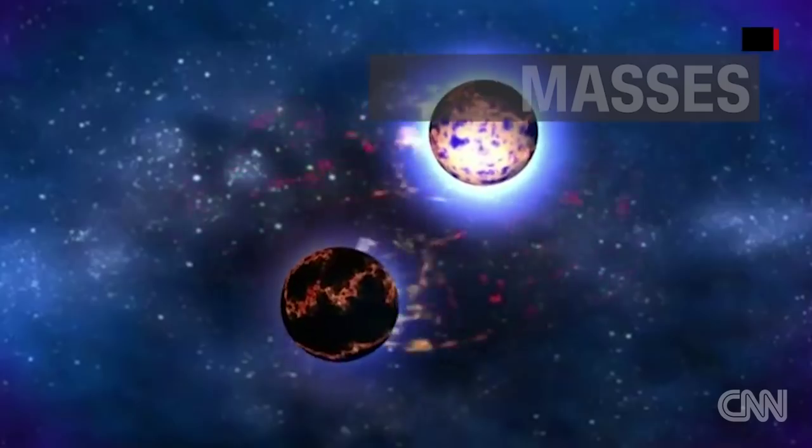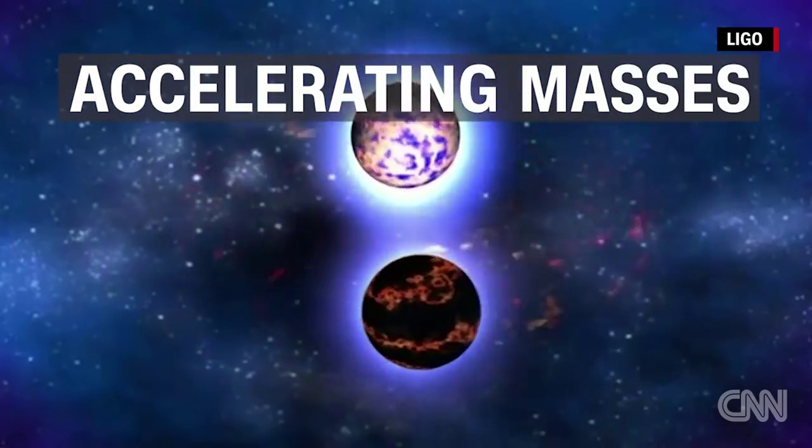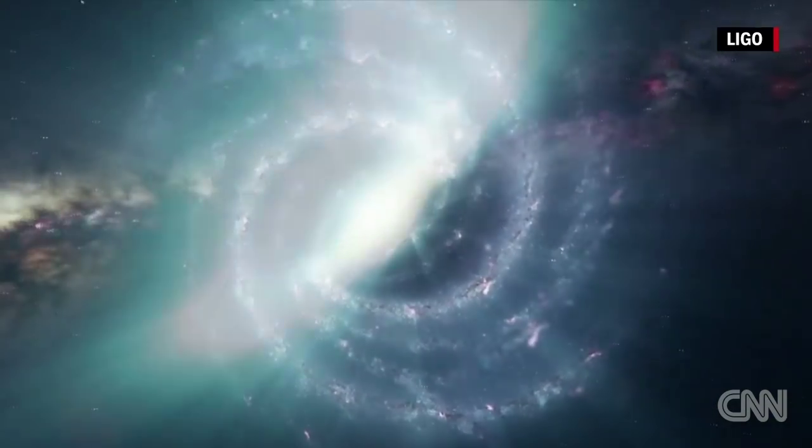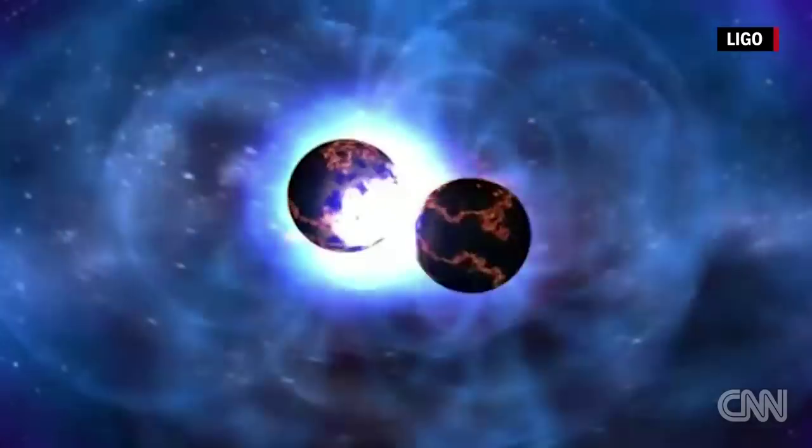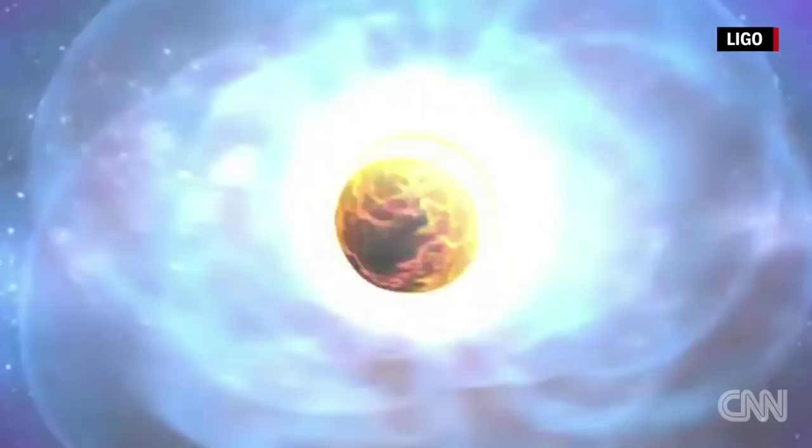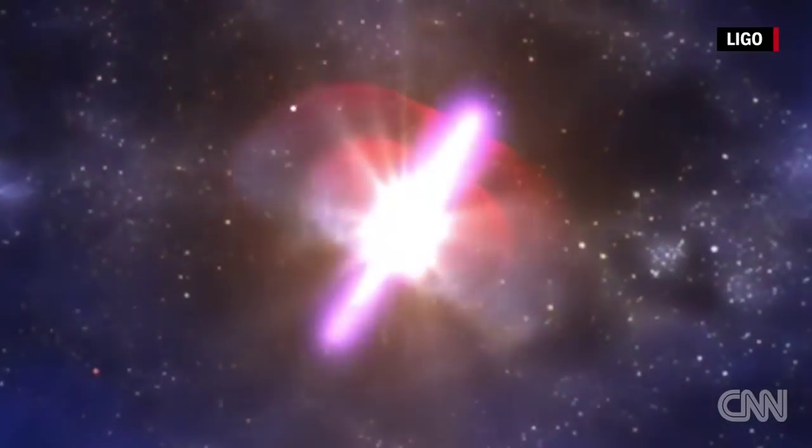Einstein proposed that accelerating masses, such as two neutron stars or two black holes, cause distortions in the fabric of the universe. When those masses eventually merge, they set off a cataclysmic event that shoots off tons of gravitational waves into space.